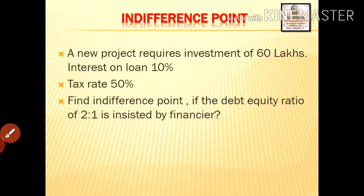A new project requires investment of 6 lakhs. Interest on loan is 10%, tax rate is 50%. Find the indifference point if a debt-equity ratio of 2:1 is insisted by the financier.